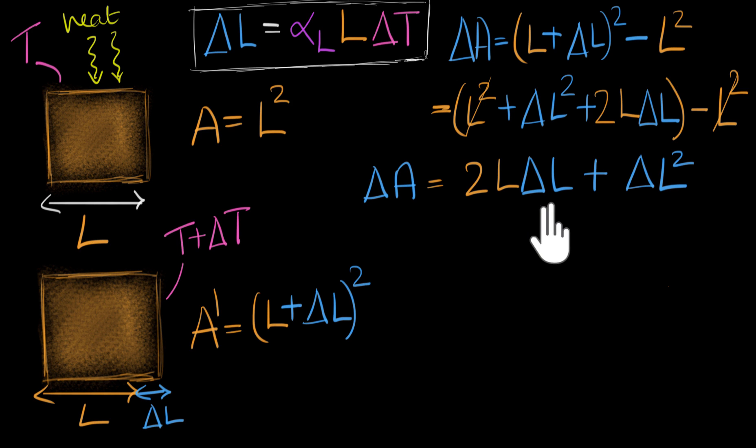But there is one more step we can do over here. Well, we need to remind ourselves that delta L is an extremely small quantity. Check it over here. We've seen this before also, that when things expand, delta L is much smaller than L. So what can you say about L delta L and delta L squared? Let's compare them.